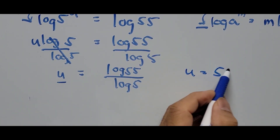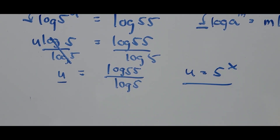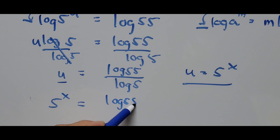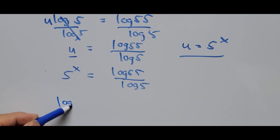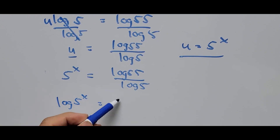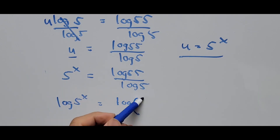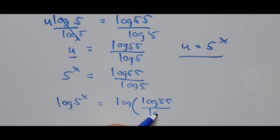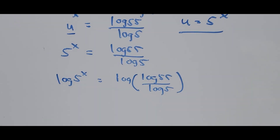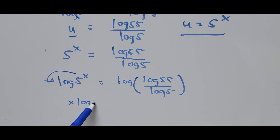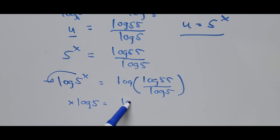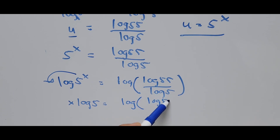Recalling that u equals 5^x from our substitution, the equation now becomes 5^x equals log 55 divided by log 5. We take the logarithm of both sides one more time: log of 5^x equals log of (log 55 divided by log 5). Bringing down the exponent as a coefficient gives x times log 5 equals log of (log 55 divided by log 5).